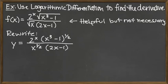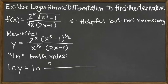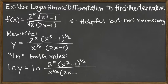So we first rewrite, and then the next step we will always do — and I'll use this in quotes because it's not technically good notation — we ln both sides. So when we ln both sides, we're taking the natural log of both sides. We have the natural log of y on the left-hand side equal to the natural log of that fraction: 2 to the x times x cubed minus 1 to the one-half on top, and x to the one-half times 2x minus 1 on the bottom.